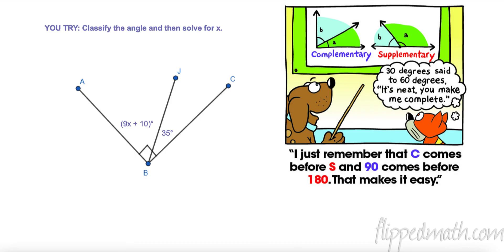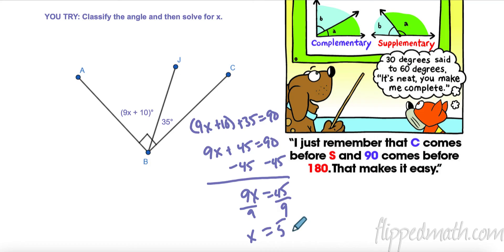So I want you to pause the video right now and try this one on your own. So let's take a look. The first thing I notice is that this angle ABC is a right angle. We have two angles that make a right angle or 90 degrees. That means they are complementary. So I'm going to add the first angle 9x plus 10 with the second angle 35 and set it equal to 90. Combine 10 and 35 to get 45. Subtract 45 from both sides and then divide by 9 and I get X is 5. There you have it.